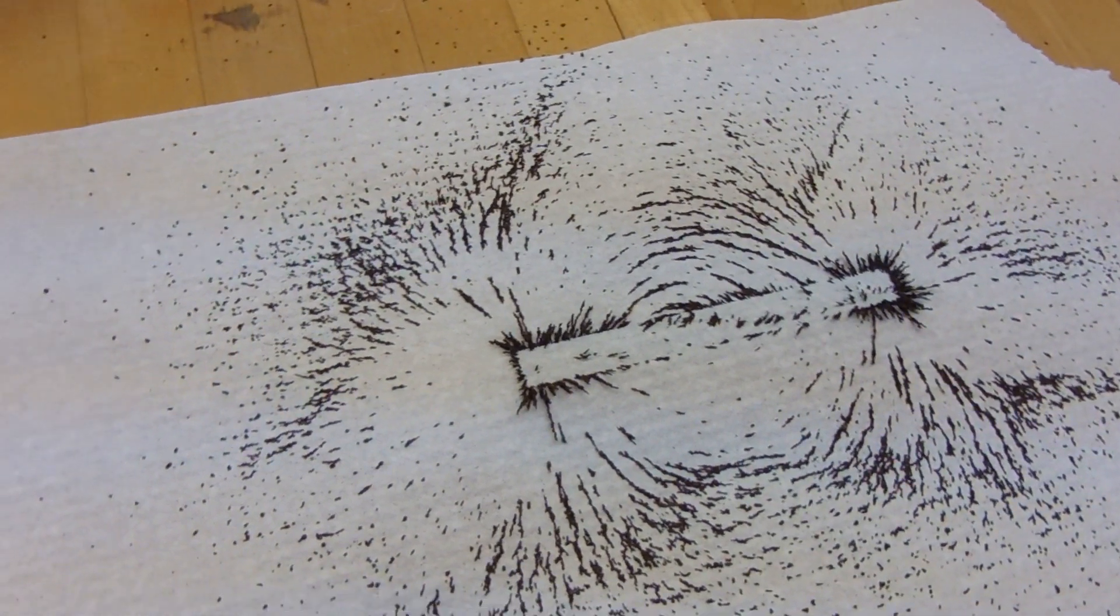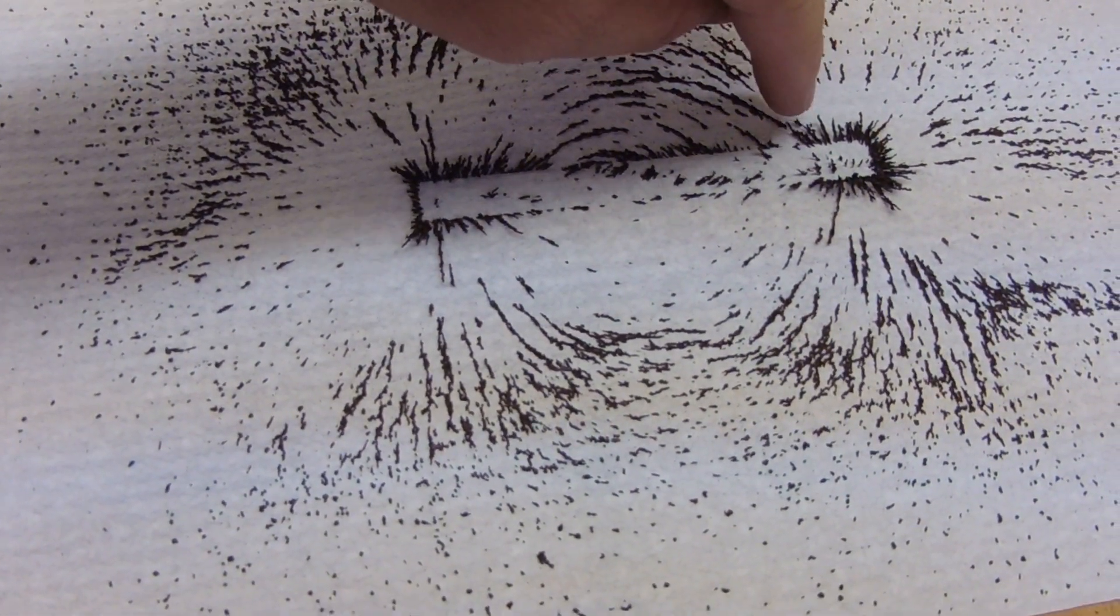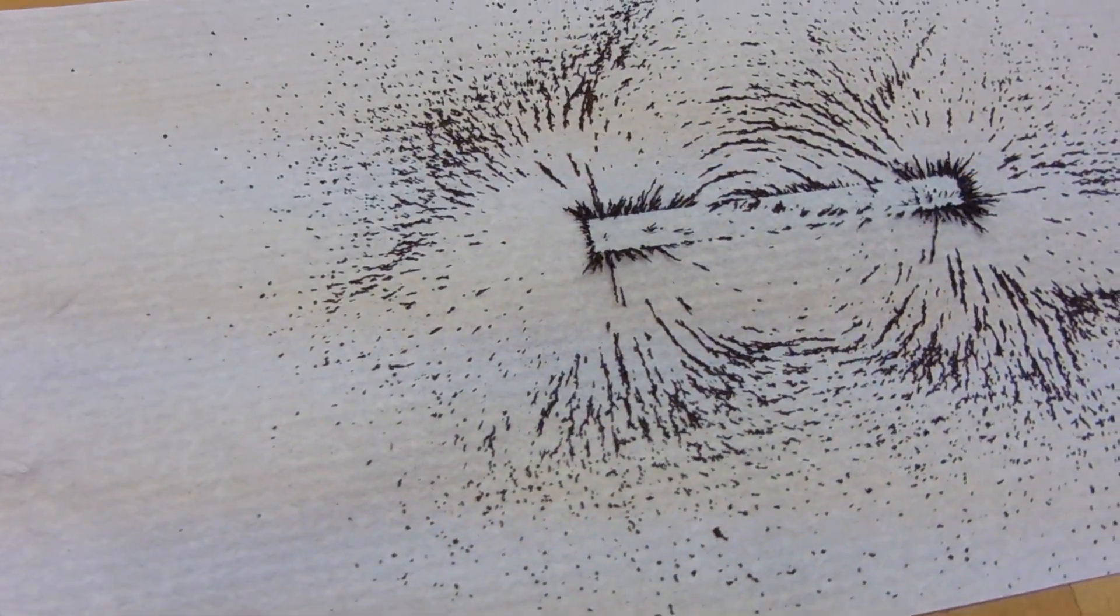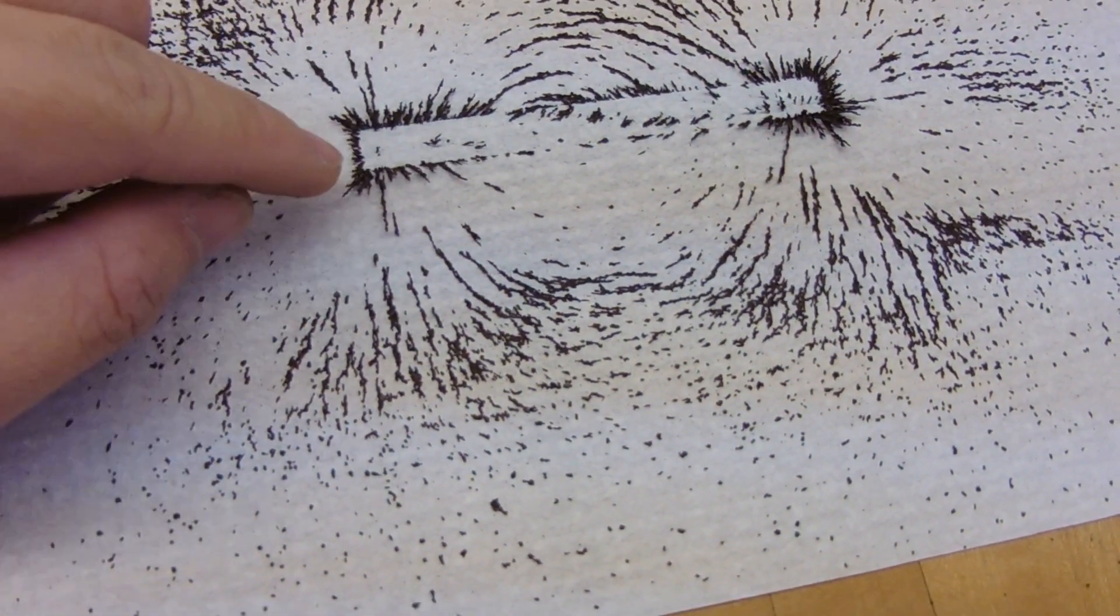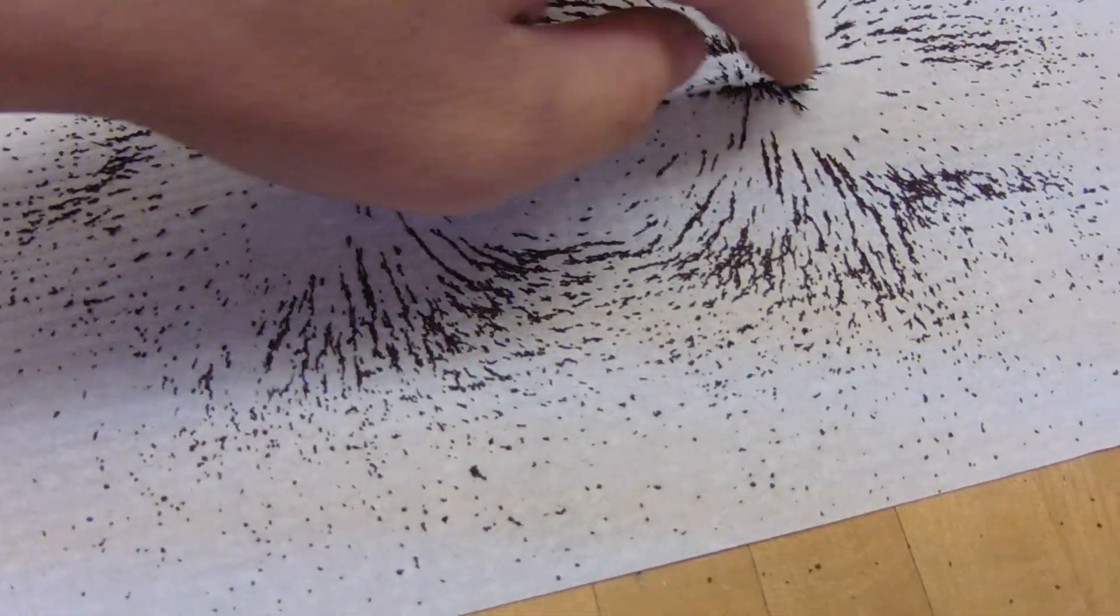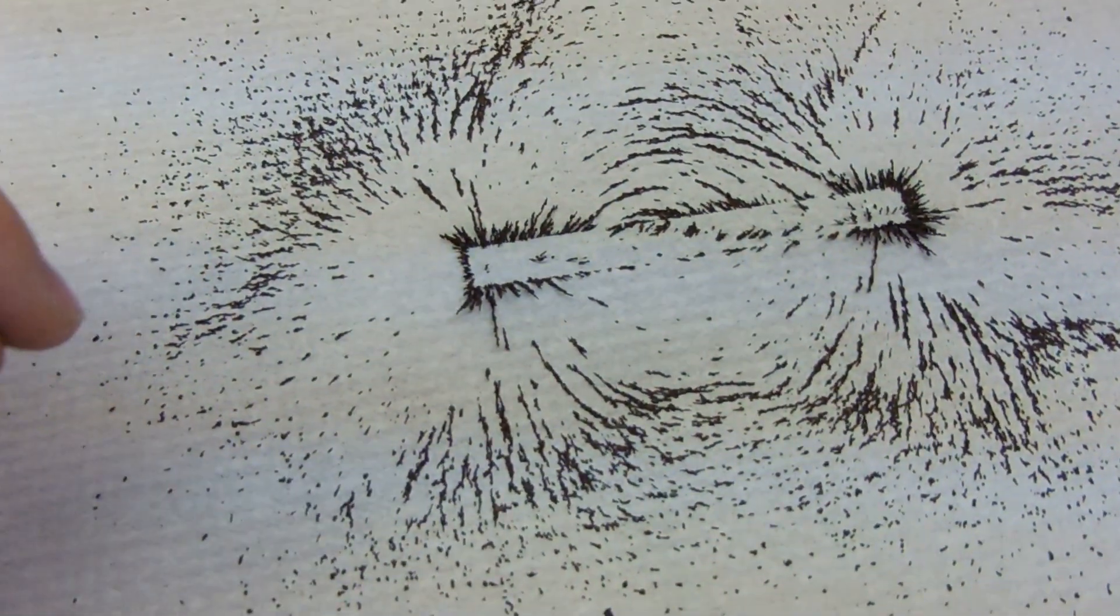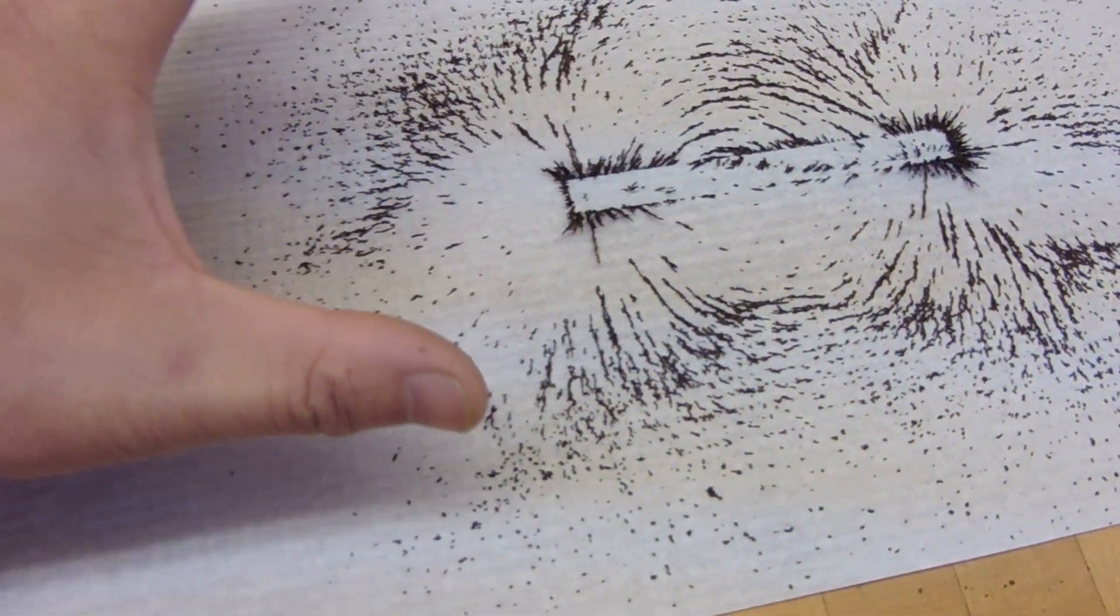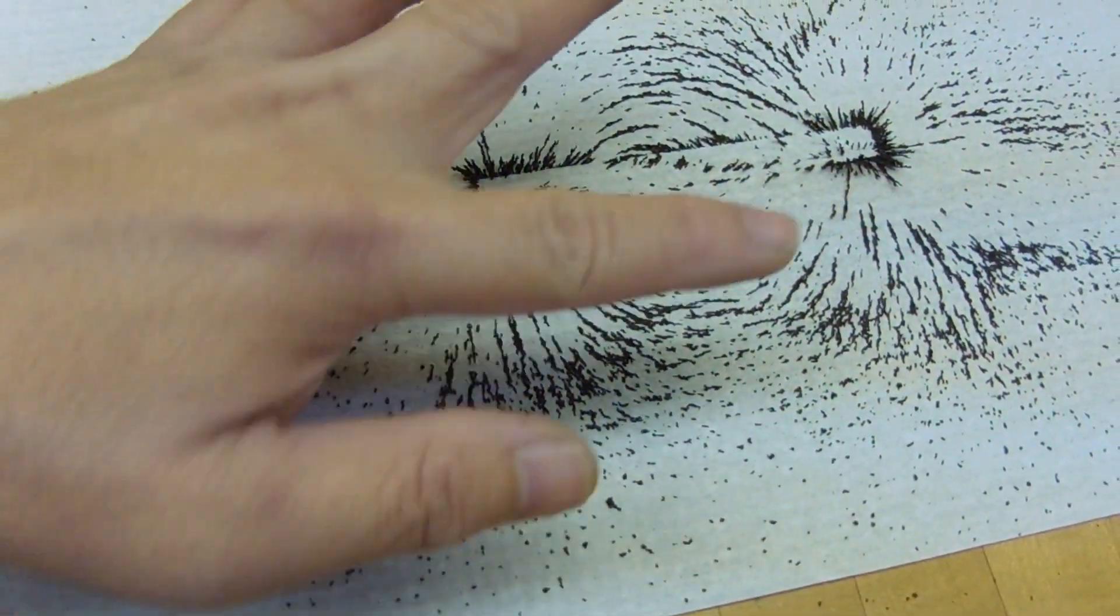As you can see, the iron filings align themselves around the bar magnet in curves. These curves originate from the north pole and terminate on the south pole. You can also see that in these two regions, there are a lot of iron filings gathering, which indicates that these are the regions of the strongest magnetic field. And farther out from the magnet, you see that the magnetic field is not that strong.